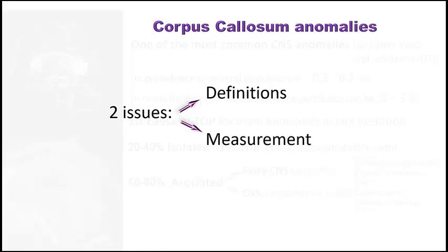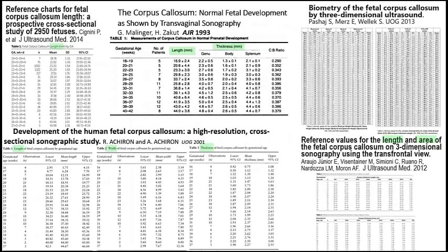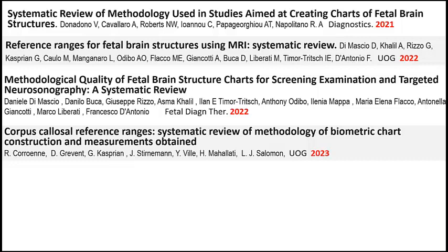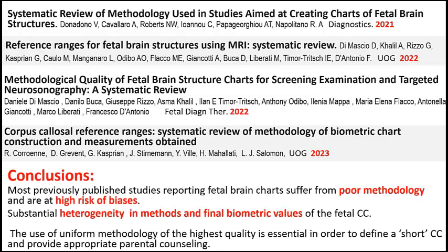An important question is how to define thin, short, or thick corpus callosum. Several reference charts have been published for the length, width, and thickness of the corpus callosum, with different numbers of patients and using different methods — 2D, 3D, and MRI. Very recently, several studies and reviews analyzed the methodology and quality of these reference charts, all reaching the same conclusion: the methodology used for creating these charts was poor in most of them, with a high risk of bias.